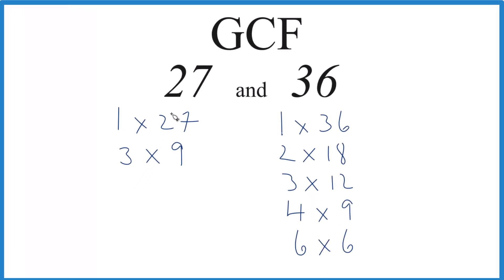So let's see which factor, the greatest factor between 27 and 36 we have in common. 1—that's a common factor. 3—we have 3, 3 is a common factor. And then 9.